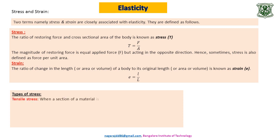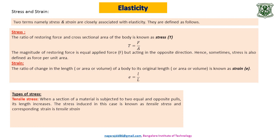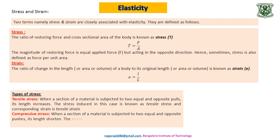Next, types of stresses. There are two types: tensile stress and compressive stress. Tensile stress: when a section of a material is subjected to two equal and opposite pulls, its length increases. The stress induced is known as tensile stress and the corresponding strain is tensile strain. Compressive stress: when two equal and opposite pushes are applied, the length shortens. The stress induced is known as compressive stress and the corresponding strain is compressive strain. Looking at the diagrams: when forces act away from the body it is tensile; when forces act towards the body, compressing it, it is compressive stress.